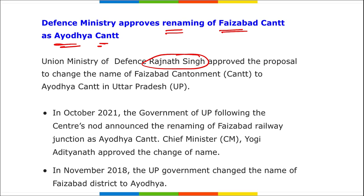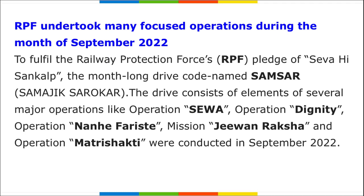The Defense Ministry has approved the renaming of Faizabad Cantonment to Ayodhya Cantonment in Uttar Pradesh. Other notable renamings include: Rajpath renamed to Kartavya Path, Allahabad renamed to Prayagraj, and Mughal Sarai Railway Junction renamed to Pandit Dindayal Upadhyay Junction.